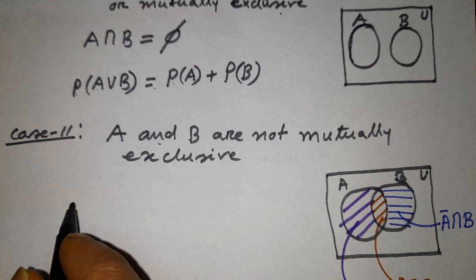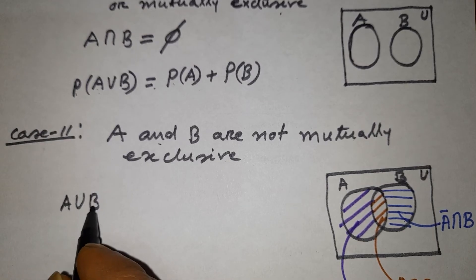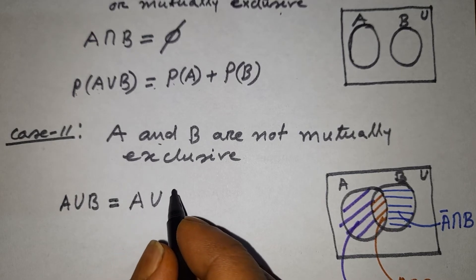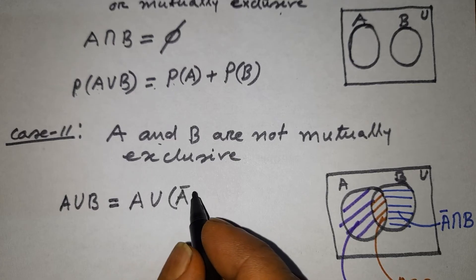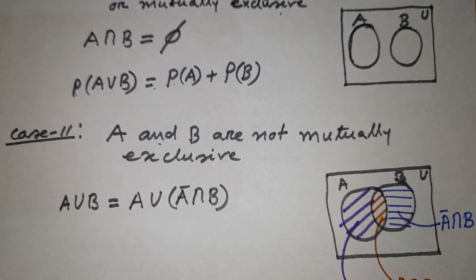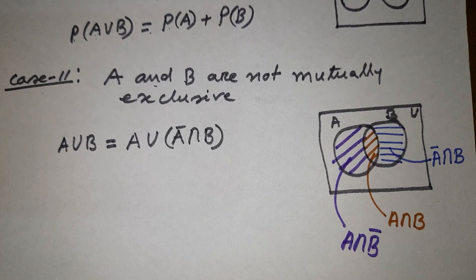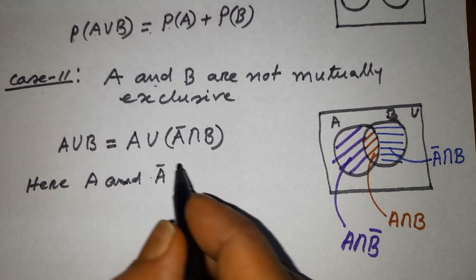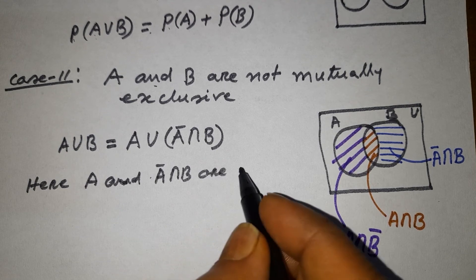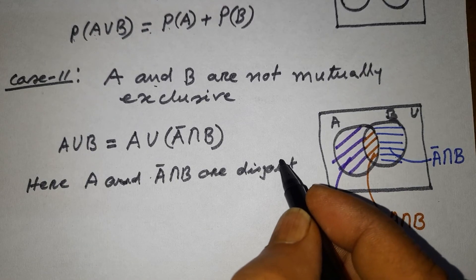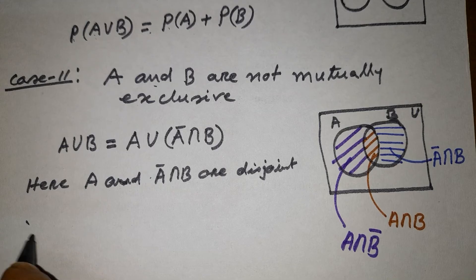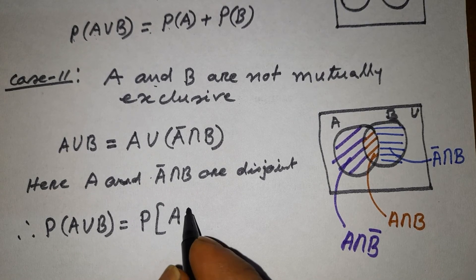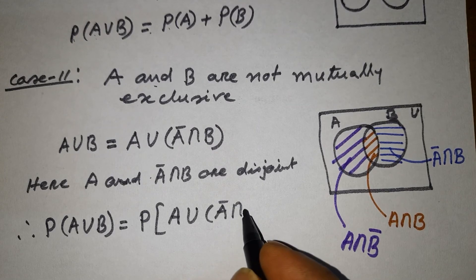Now from this Venn diagram, we get that A union B is equal to A union A complement intersection B. Here A and A complement intersection B are disjoint. Therefore, probability of A union B is equal to probability of A plus probability of A complement intersection B.